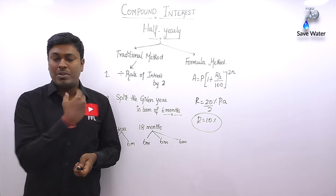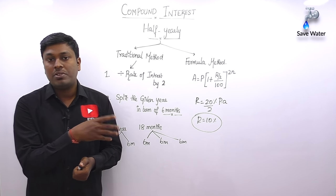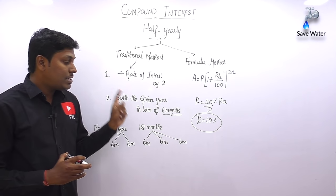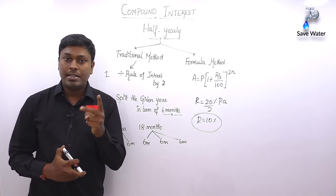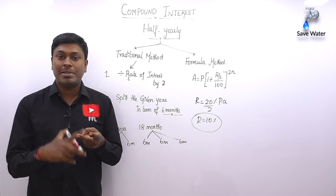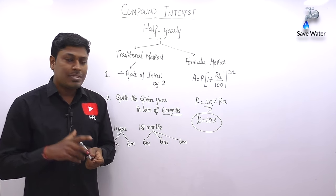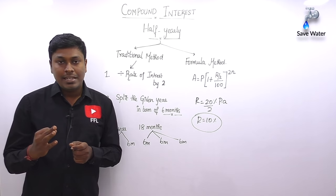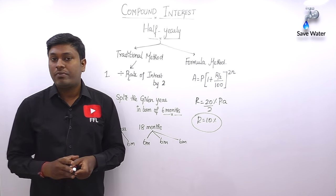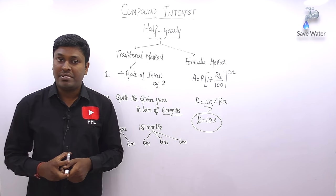So if the rate of interest is 40% per annum, first divide by 2 to get 20%. These are the basics for solving a compound half-yearly question. For the traditional method: divide r by 2, and split time in terms of six months. Now let me move on to three different questions, solved by both traditional and formula methods.